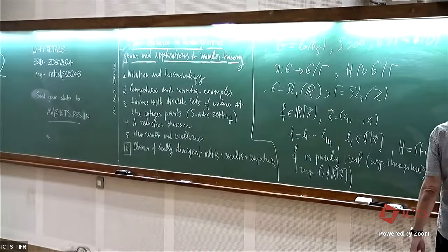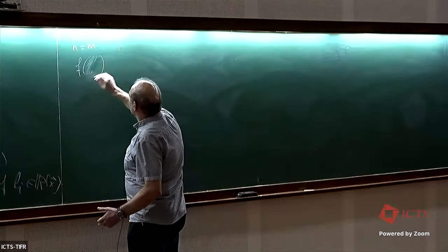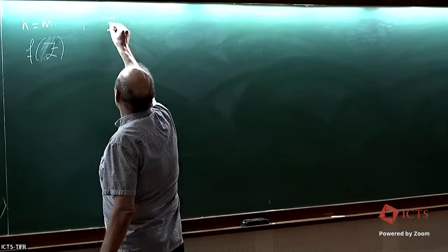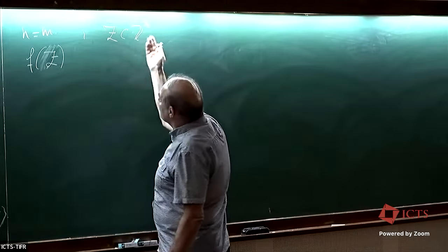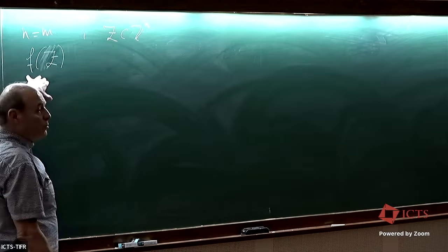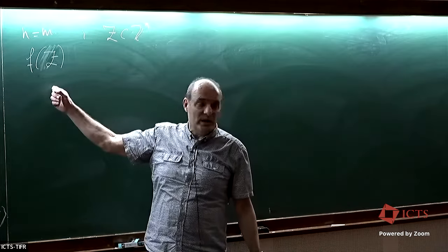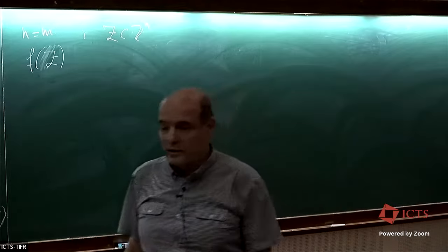I am interested in the values of such forms at the integer points. We can replace Z^n with a more general γ-invariant subset Z, which is almost the same but a little bit more general. It is of natural interest to try to classify this form F, to characterize F, in terms of its set of values at the integer points.